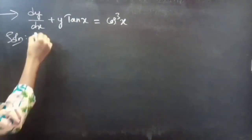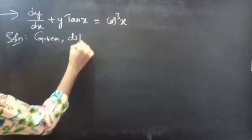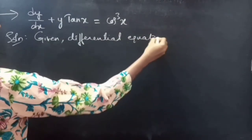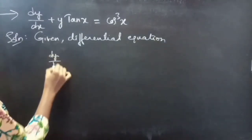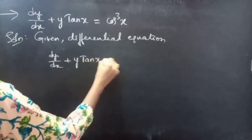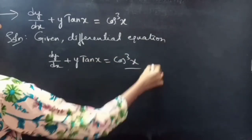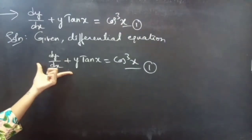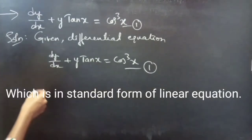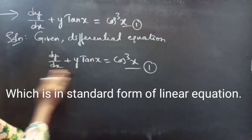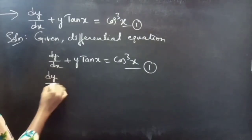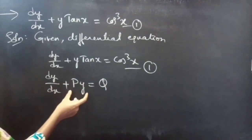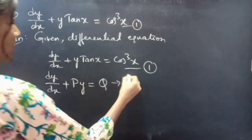Given differential equation: dy/dx plus y·tan x equals cos³x. Consider the given equation as equation 1. Since the given equation is in standard form of a linear equation, the standard form is dy/dx plus P·y equals Q.